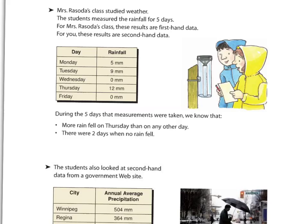Let's look at some examples. We have Ms. Rosda's class who's studying weather — maybe they're in grade 5 doing weather as well. The students measured the rainfall for five days, so the students measured it. For Ms. Rosda's class, these results are first-hand data. For you, these results are second-hand data.